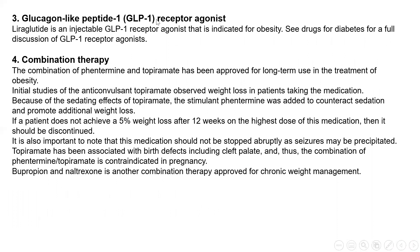We will not talk too much about glucagon-like peptide drugs today as they were covered with drugs for diabetes, but some details will be mentioned at the end of the lecture. Moving on to combination therapy, where more than one drug is used to control obesity. The first example is phentermine combined with topiramate. Phentermine increases the release of neurotransmitters in the brain, while topiramate is an anticonvulsant drug used for epilepsy. It was noticed that topiramate in epileptic patients causes a decrease in body weight.